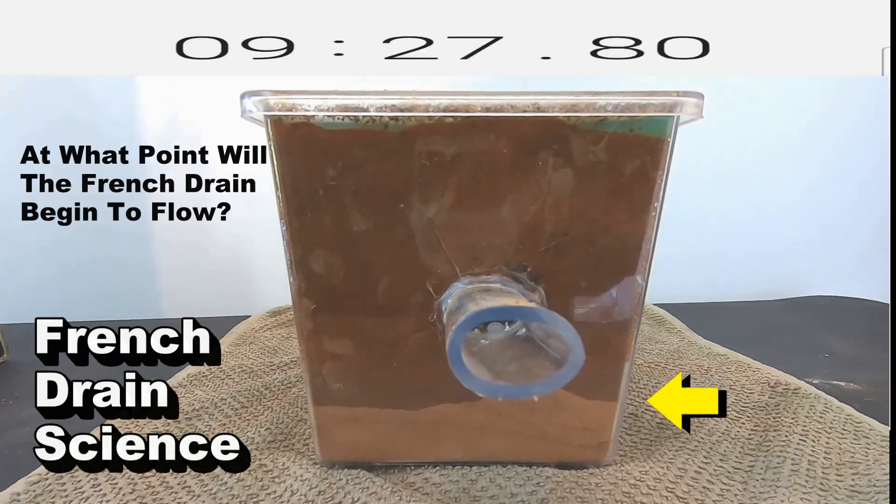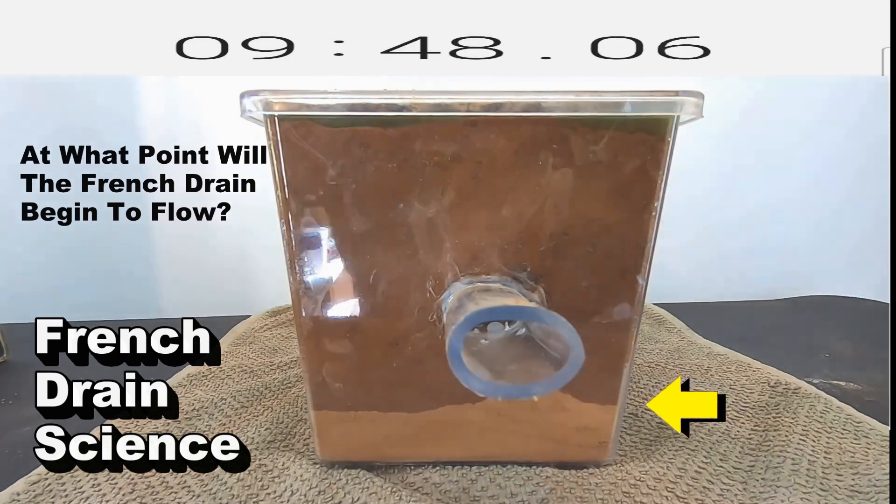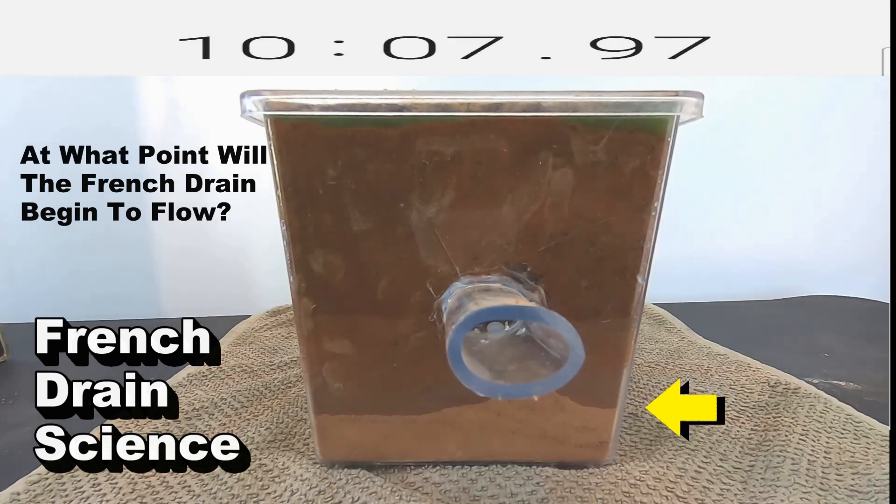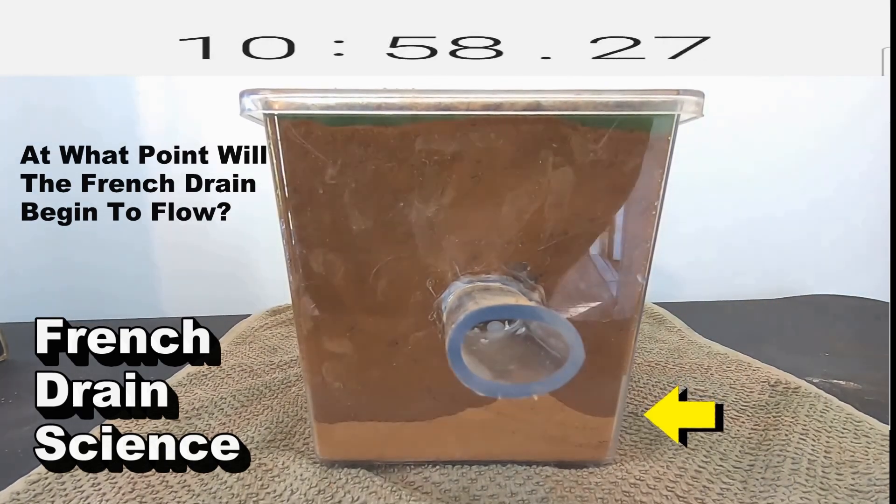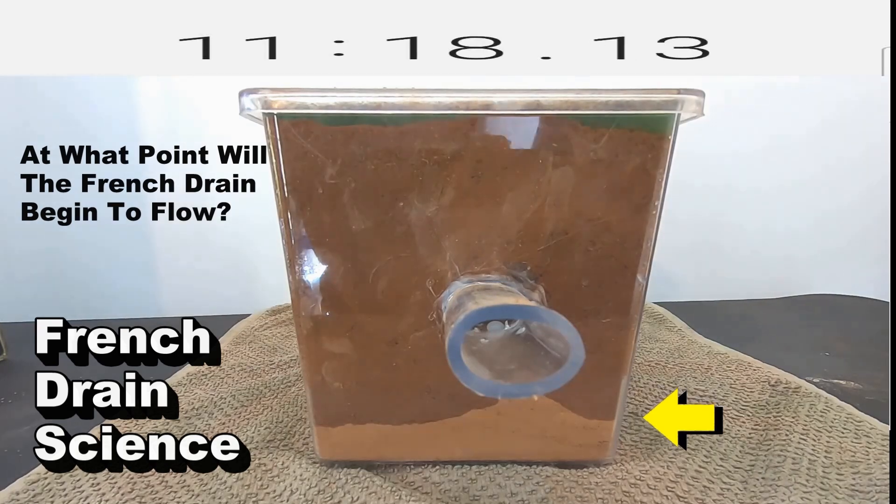At what point will that French drain begin to flow? You can see the water in the top corner, it's just sitting there on the surface. Another event rainfall. Still no water is coming out of that drain.